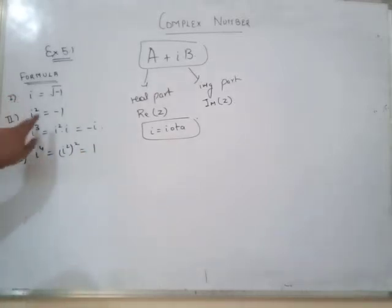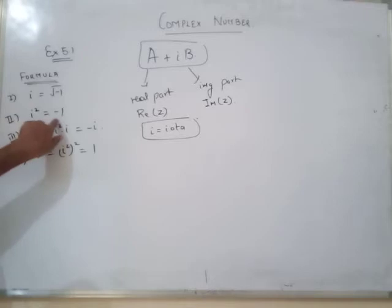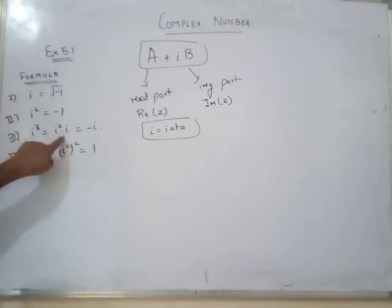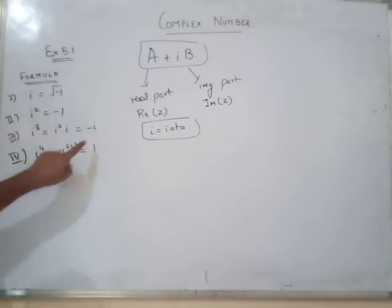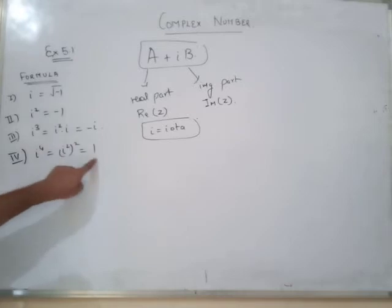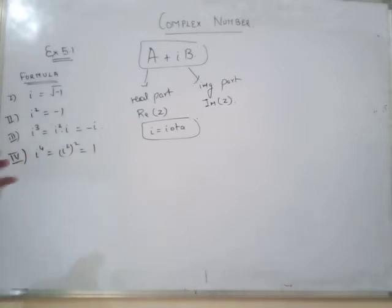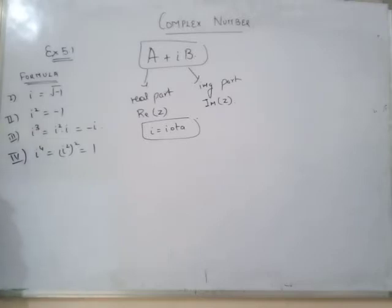Basically you have to learn only one formula: iota equals root of minus 1. Iota squared value is minus 1. Iota cubed value: iota squared times iota gives minus 1 times iota, so minus iota. Iota to the power 4 is equivalent to 1. Just remember these four formulas while doing exercise 5.1.